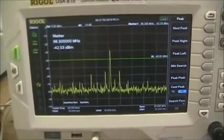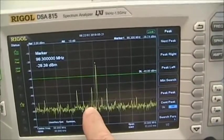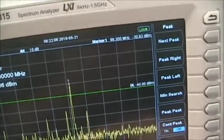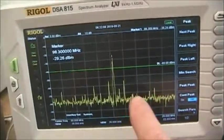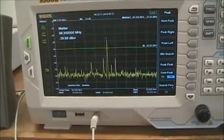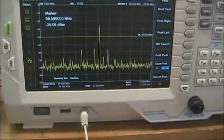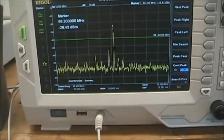And that's 98.3. The next channel, there's a 97.5, a 99.1, and a 99.9. FM signals are 200 kilohertz in bandwidth and they're spaced every 400 kilohertz so that they don't interfere with each other. That's by FCC rule.